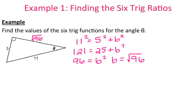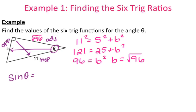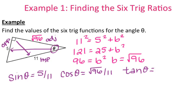To find the 6 trig functions, I'm going to label my 3 sides. Here's my angle — straight across the triangle is your opposite side, across from your right angle is your hypotenuse, and the side that's next to your angle is the adjacent. Sine of theta is opposite over hypotenuse, so that's 5/11. Cosine is adjacent over hypotenuse, so that's the square root of 96 over 11. Tangent is opposite over adjacent, so that's 5 over the square root of 96. Since you can't have a radical in the denominator, that becomes 5 root 96 over 96.